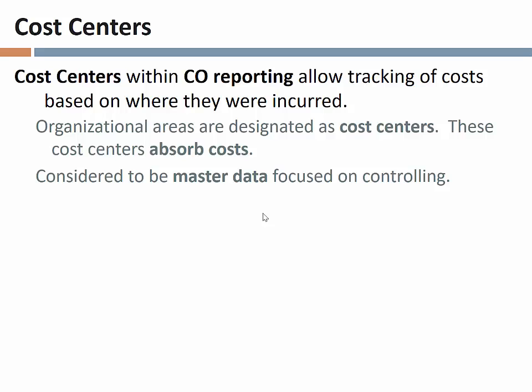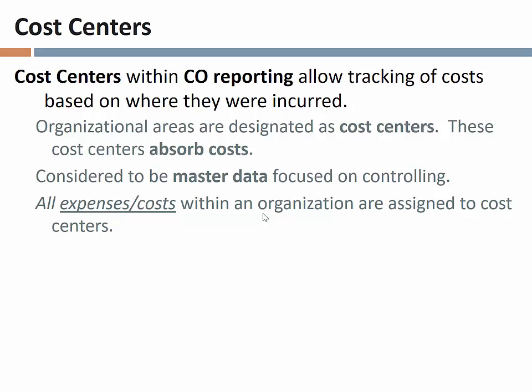This cost accounting reporting is considered to be master data focused on controlling. Cost centers are really an example of organizational data, but you could also see where there are entities within these cost centers that would be master data focused on controlling. The key point is: if we are going to do cost accounting, then every expense, every cost we incur as an organization, is going to have to be assigned to a cost center. You can imagine an organization that makes many different kinds of products, where some costs would be assigned to one product line and others to different product lines, and we have to figure out how to allocate those in a fair way.